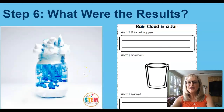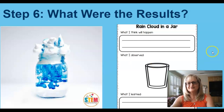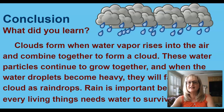That was fun. Now that we have completed the experiment, I want you to complete your observation by drawing a picture of what you observed and write what you learned from this experiment. These worksheets will act as an informal assessment to determine your students' understanding. Conclusion: clouds form when water vapor rises into the air and combines together to form clouds. These water particles continue to grow together, and when the water droplets become heavy, they fall from the cloud as raindrops.